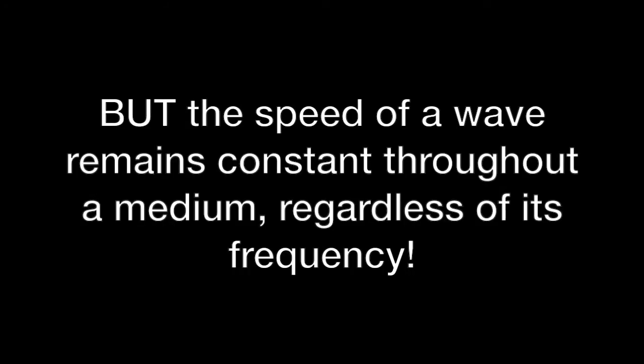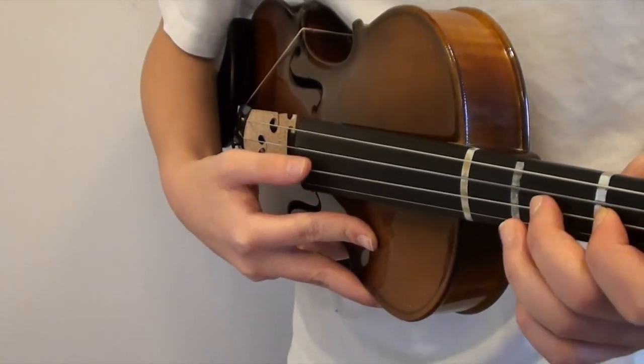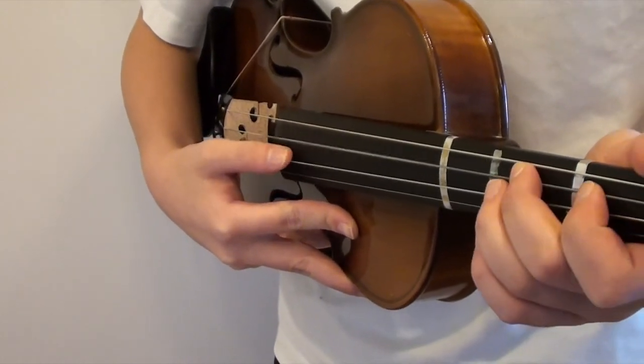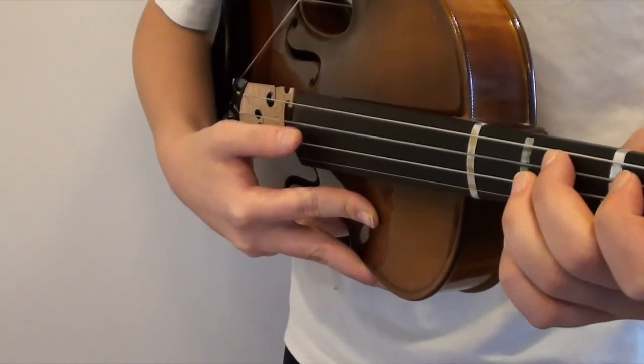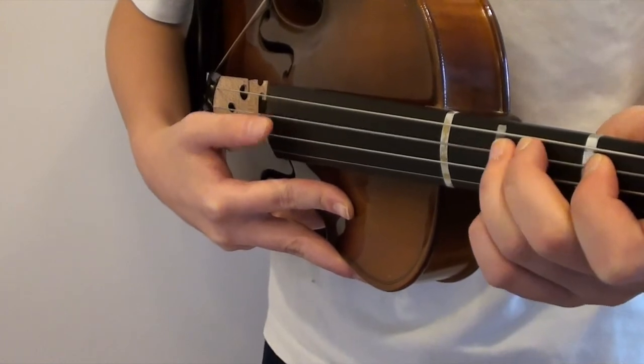However, we know that the velocity of a wave through a medium isn't dependent on the frequency of the wave, but the properties of the medium itself. So we must manipulate the medium or the string to create different sounds. We can do so by altering the string's tension by tuning or by changing its mass density by using different strings for different notes altogether.